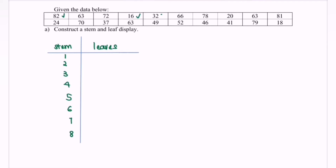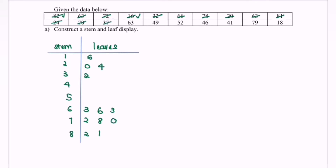Now we categorize the data. For 82, we have 8 on the left as the stem and 2 as the leaf. Followed by 63, 72, 16, 32, 66, 78, 20, 63, 81, 24, 70, 60, 37, 63, 49, 52, 42, 46, 41, 79, 18.